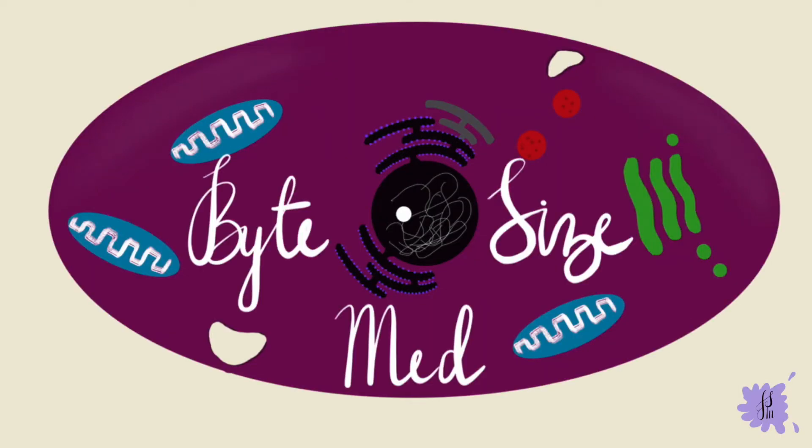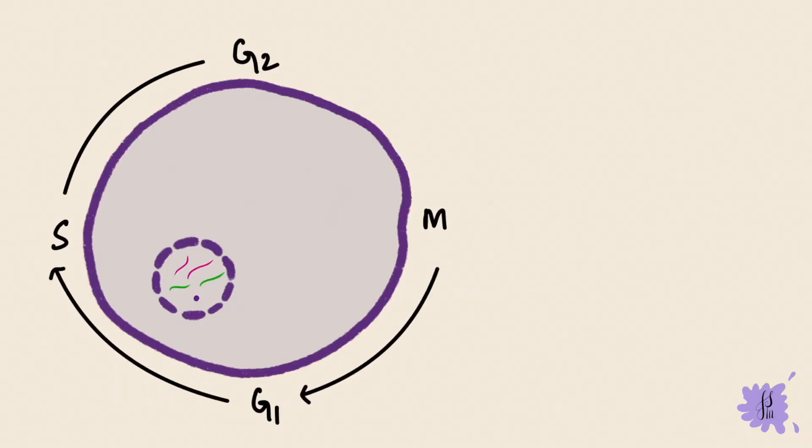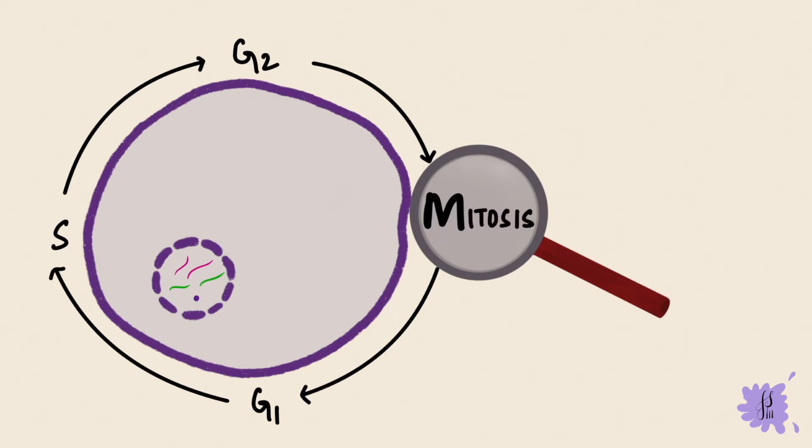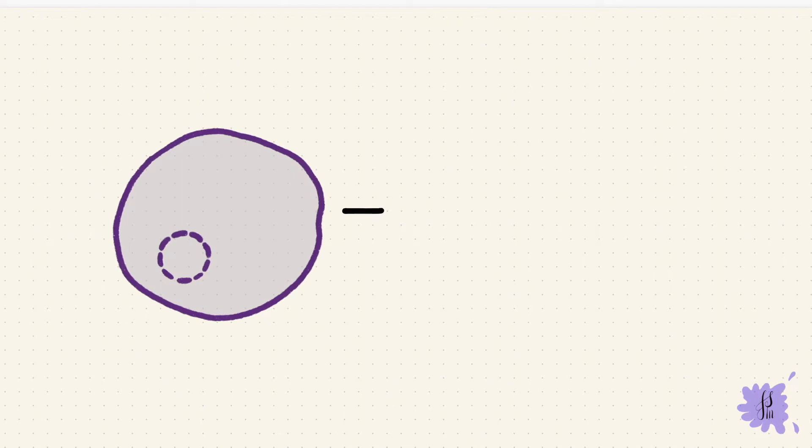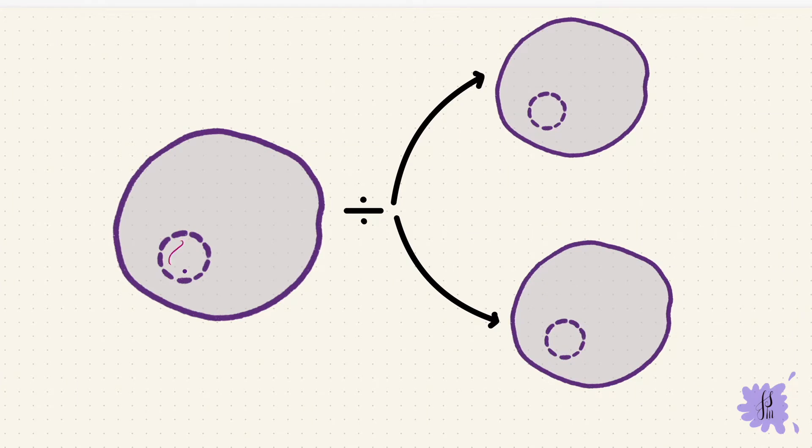Hello and welcome to Bite Size Med. This video is on the human cell cycle with the focus on mitosis. Mitosis is how somatic cells divide. It's how one parent cell divides into two cells such that each cell has the same number of chromosomes as the parent cell.